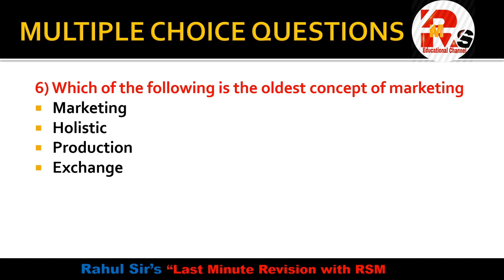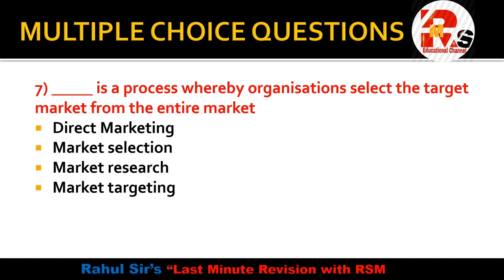Question number 6: Which of the following is the oldest concept of marketing? In the evolution of marketing, we have Marketing concept, Production concept, Product concept, Holistic concept, and Exchange concept. The modern concepts include Marketing and Holistic concept — covering integrated marketing and internal marketing. The oldest concept is the Exchange concept. The right answer for question number 6 is Exchange concept.